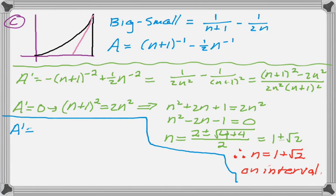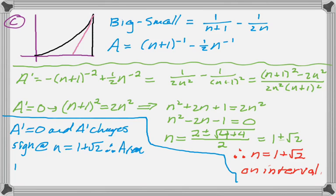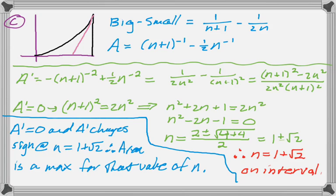So I write up my answer: A prime equals 0, and A prime changes sign from positive to negative there — make sure you add that in. So the area must be a maximum for n equals (1 plus radical 2). I'll note that I made an error and probably lost a point there, so don't do that. Anyway, it's really just the algebra in this section that is kind of murderous on this particular problem, but I hope this is helpful. Good luck.